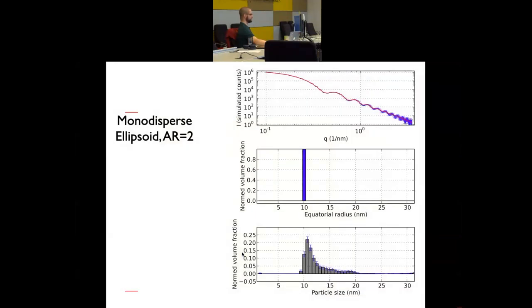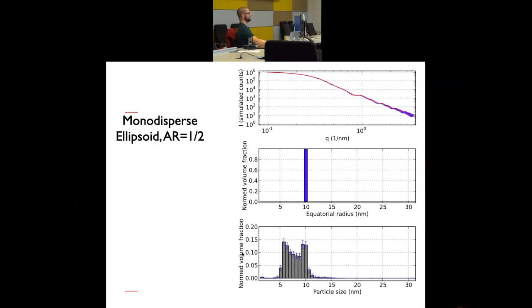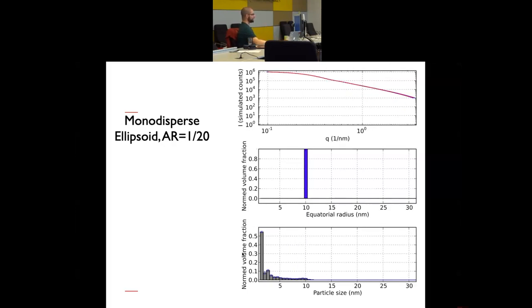I've also simulated this. I can have monodisperse ellipsoids with an aspect ratio of 2. And I can fit those with spheres. I can have an aspect ratio of 20. I can fit those with spheres. I can have an aspect ratio of 1 of half. Basically, oblate ellipsoids, right? Sort of thick disk-like ones. Same with 1 20th. That still fits.